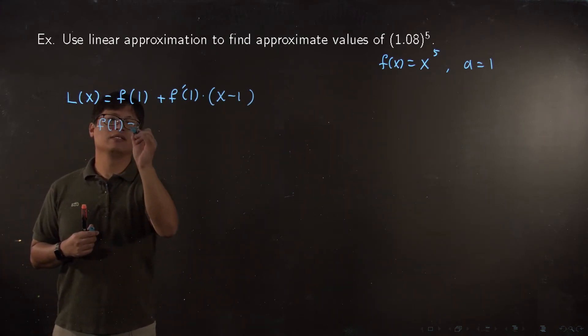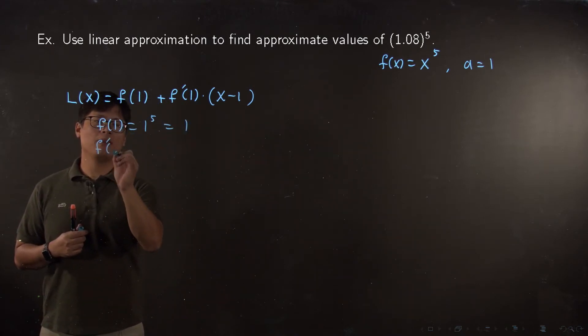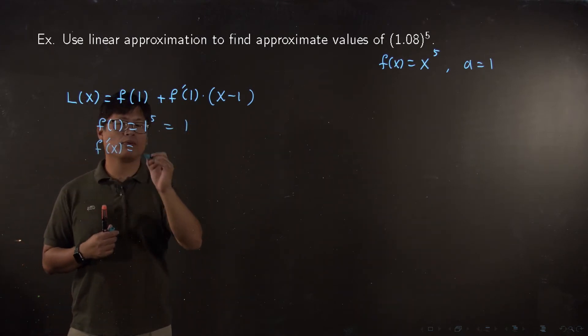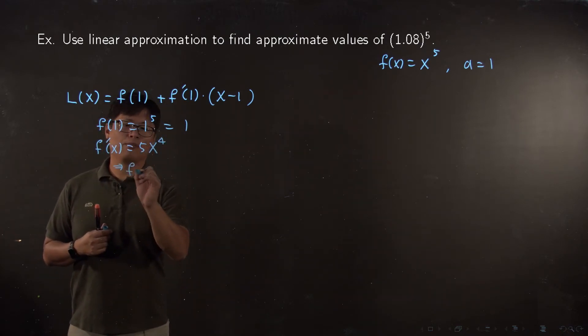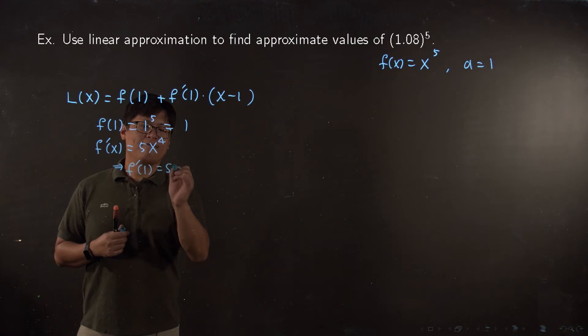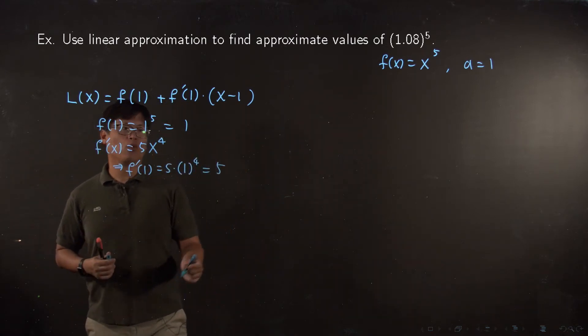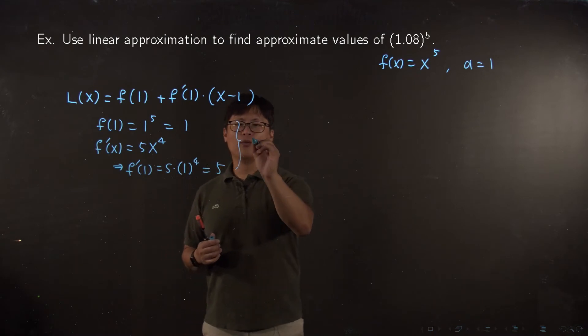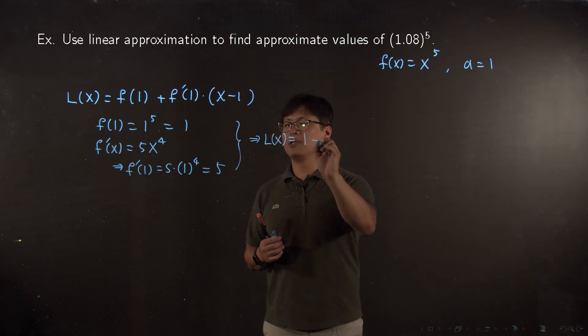f(1) is 1 to the fifth, which is 1. f'(x) equals, by the power rule, 5x to the fourth. Then f'(1) is 5 times 1 to the fourth, which is 5.